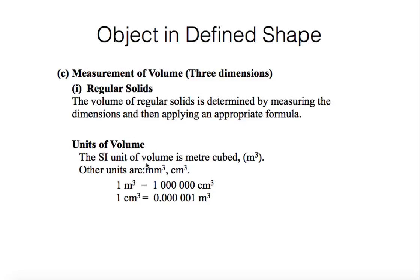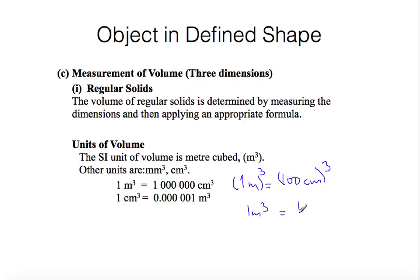The unit of volume is meter cube. To convert from meter cube to centimeter cube, remember that one meter equals 100 centimeters. If we cube both sides, one meter cube equals 10 squared cubed, which is 10 to the 6 centimeter cube.